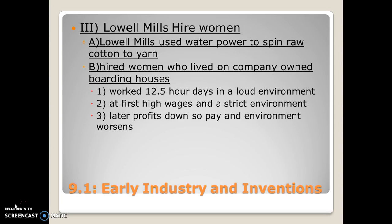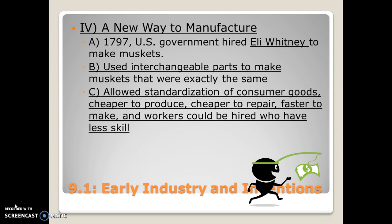The women at the Lowell Mills worked 12.5 hours every single day except Sundays in an extremely loud and unsafe environment. At first they were paid well, but as more competition came in, stricter conditions were created and wages began to be cut for profit. The environment worsened — cotton floating in the air caused a condition called cotton lung, and many workers lost body parts like fingers or became very ill. However, the Lowell Mills helped show that women could work and earn wages just like men.